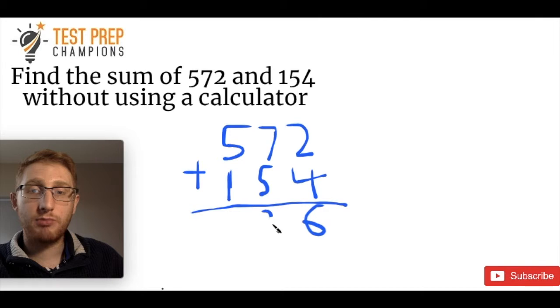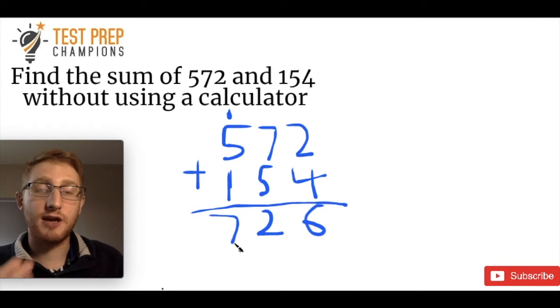So what I do is we would put 2 down here, and I stack the 1 up on top here. So then I would do 1 plus 5, which is 6, plus another 1 is 7. Our answer is 726.